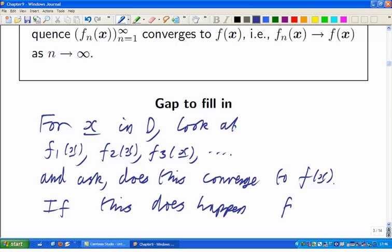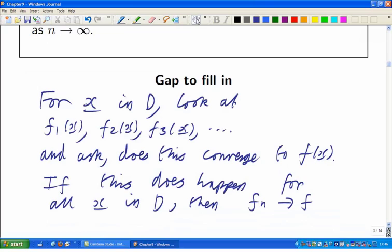So, you have to look for all x in D, look at the sequence, does it converge to f of x. If that works for every x in D, then you say you've got pointwise convergence of the sequence fn to f. It's not a very strong notion of convergence, in fact, and it doesn't have very good properties. But it is a useful starting point when you want to understand some of the other notions of convergence.